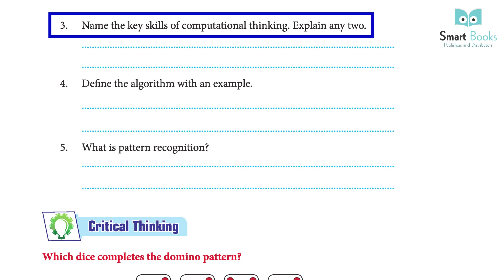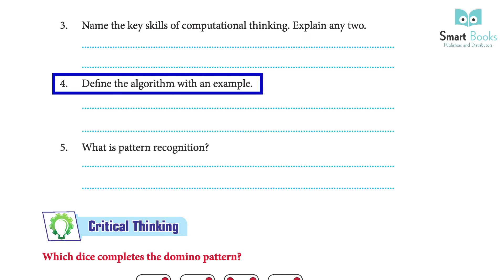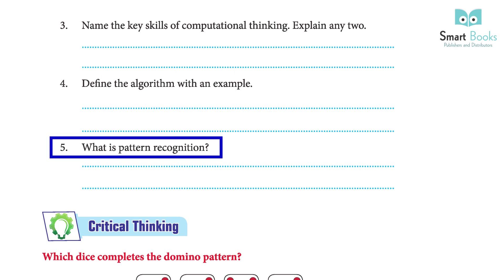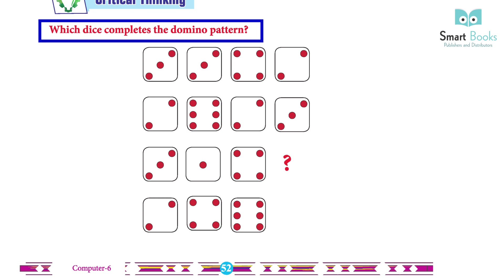3) Name the key skills of computational thinking and explain any two. Answer: There are 4 key skills — decomposition, pattern recognition, pattern abstraction, and algorithm design. 4) Define algorithm with an example. Answer: Algorithm design is the process of laying out the steps and rules that must be followed in order to achieve the desired result. 5) What is pattern recognition? Answer: Pattern recognition is crucial in computational thinking since it allows the user to find solutions more quickly. Once a problem is broken down, discovering patterns in the broken parts simplifies work.